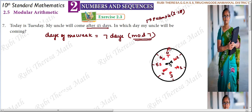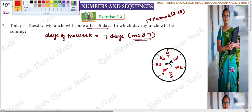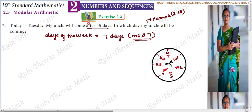So 0 is Sunday — Sunday is the first day of the week. So 0 is Sunday, 1 is Monday, 2 is Tuesday. Tuesday is the second position. My uncle will come after 45 days. Tuesday is assigned position 2.